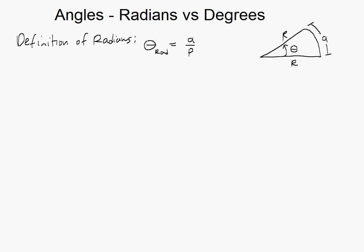This is by definition, and this is used because in my previous video I showed what pi was, which was 3.141... and it was the ratio of circumference over the diameter. So if you look at this, if you have a full circle,